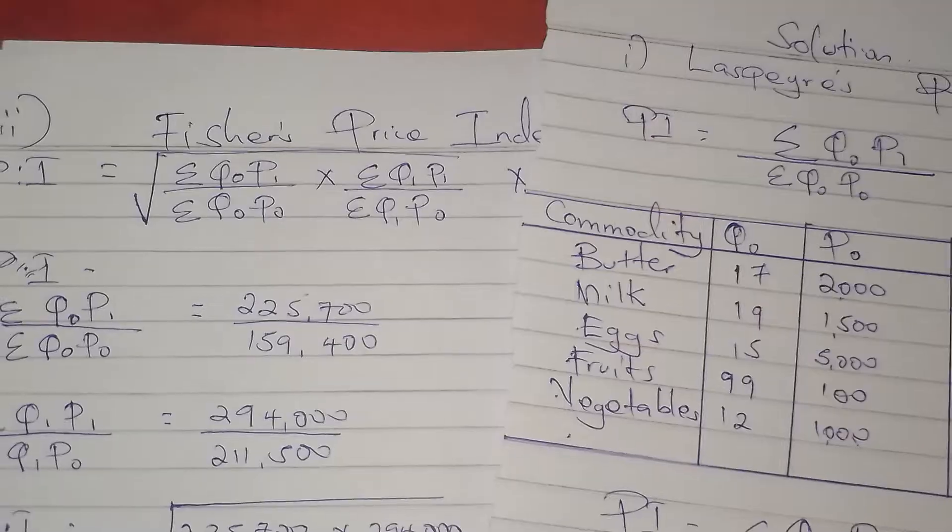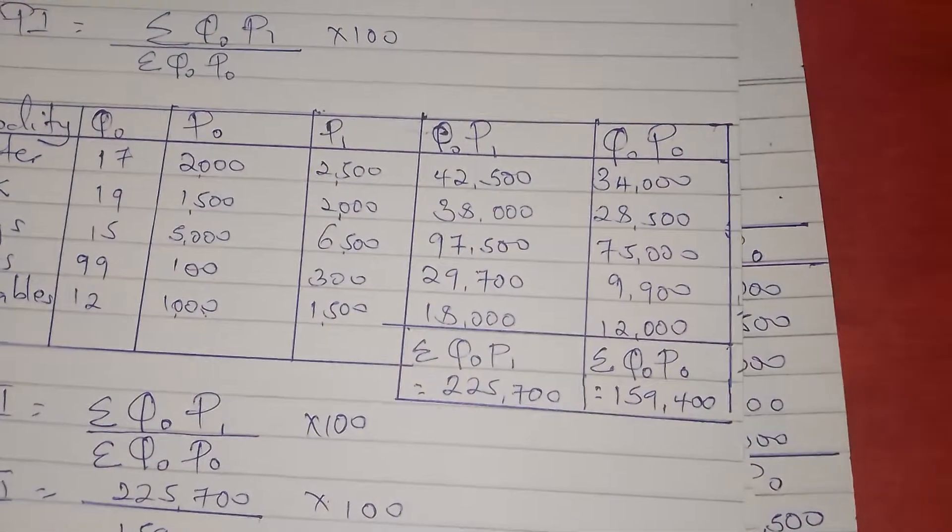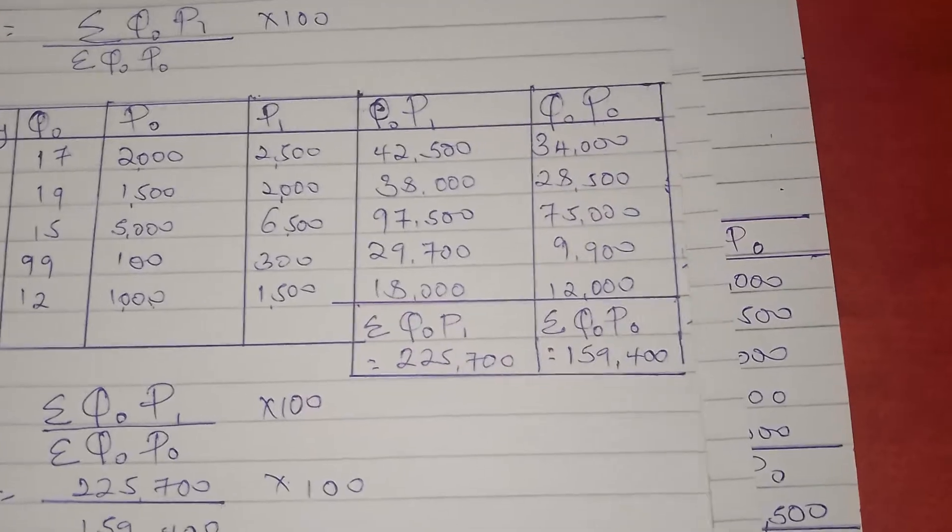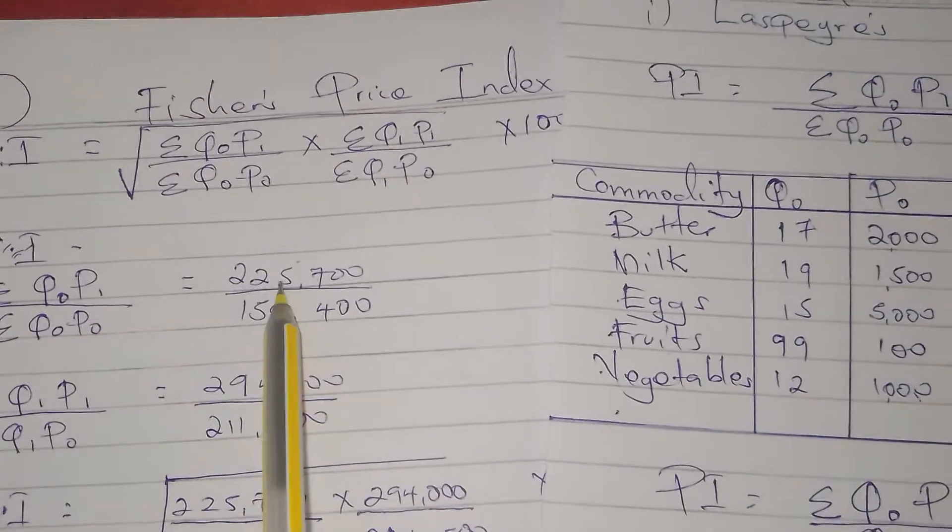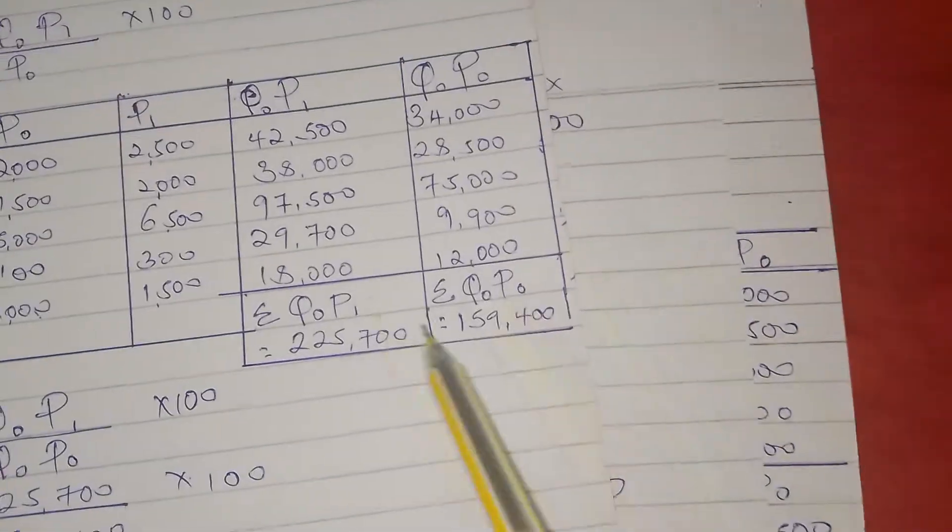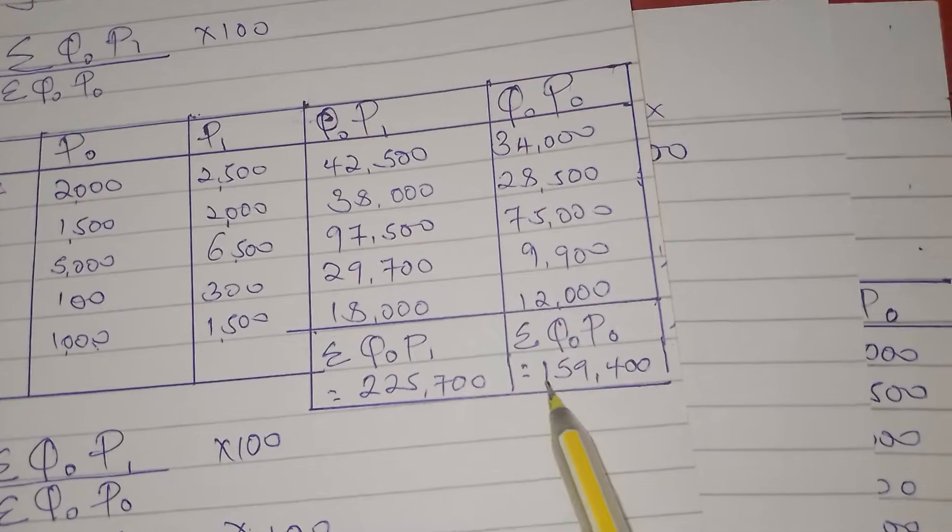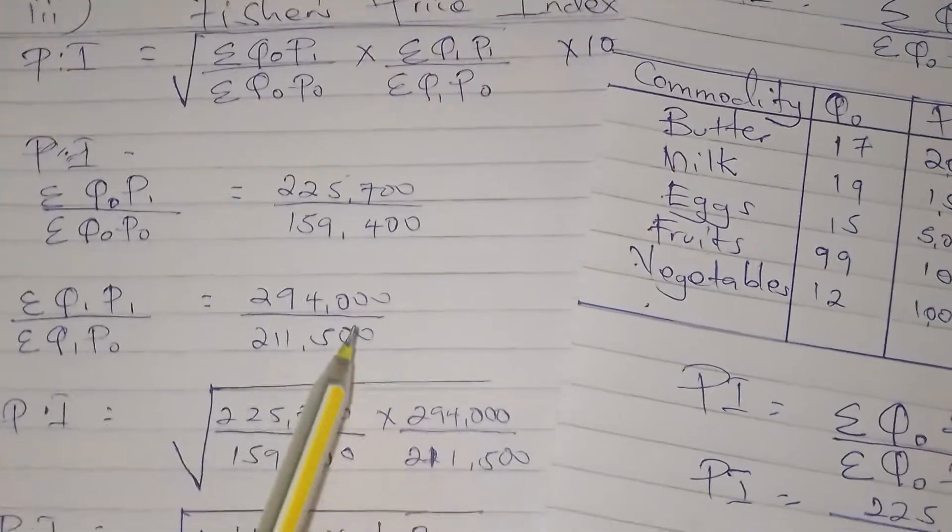Summation q₀p₁ was 257,700, out of summation q₀p₀. Q₀p₀ we had it from Laspeyres, which is 159,400. Here, then...